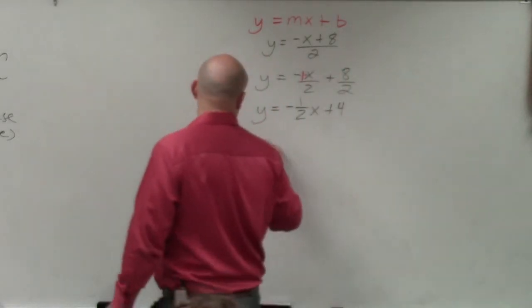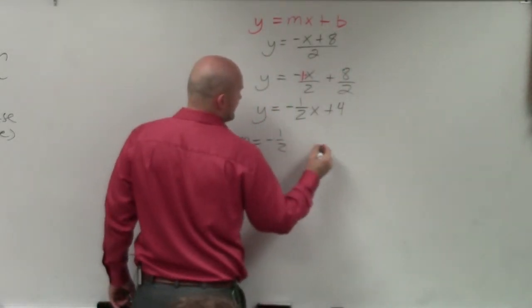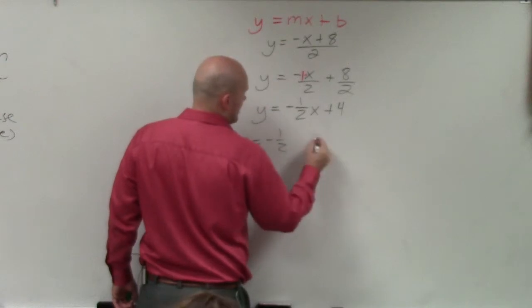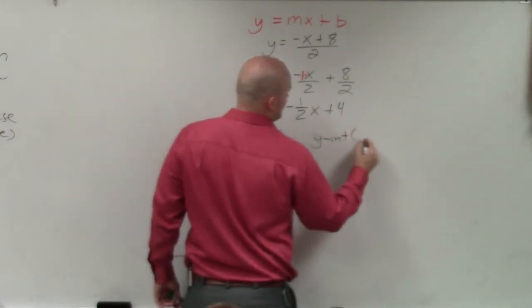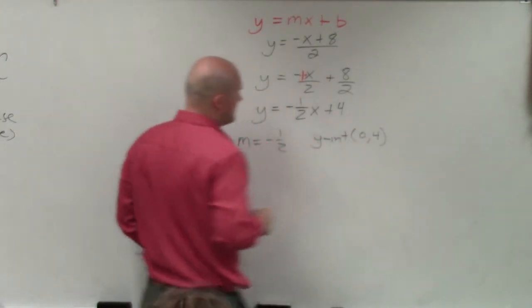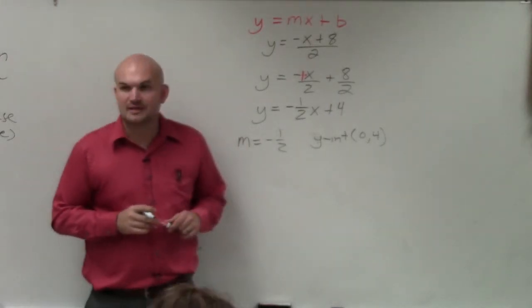So we could say m is equal to negative one-half, and our y-intercept is 0 comma 4. Anybody have any questions?